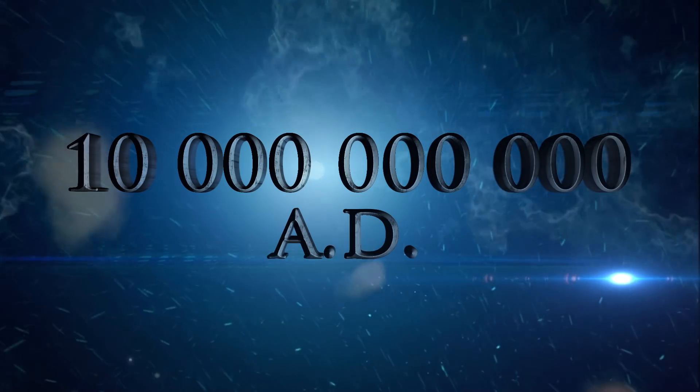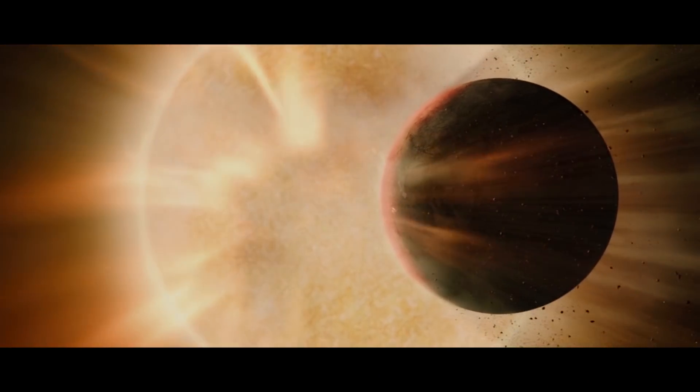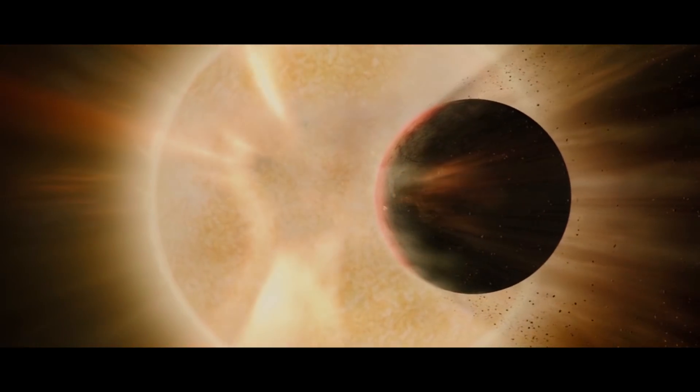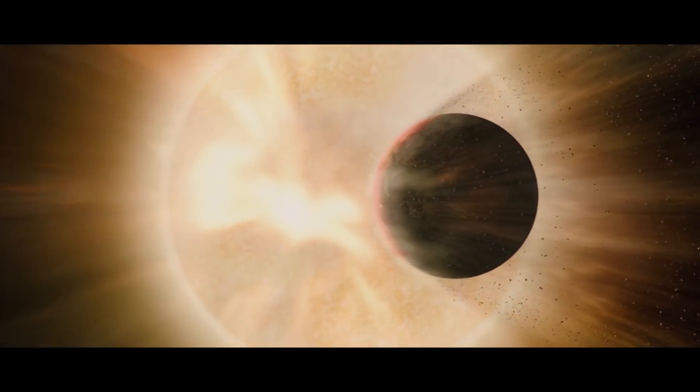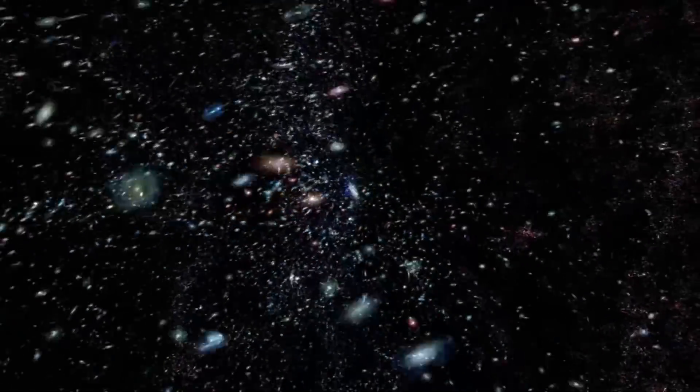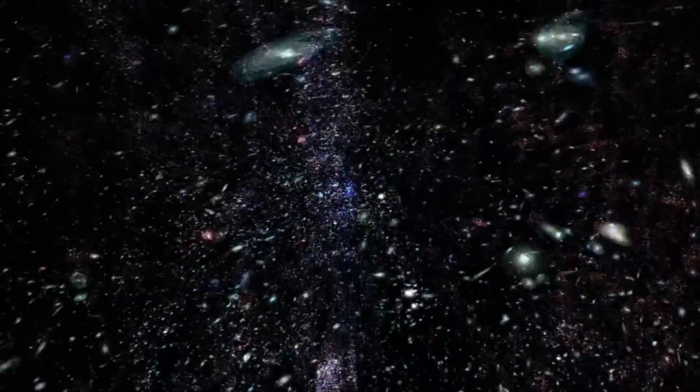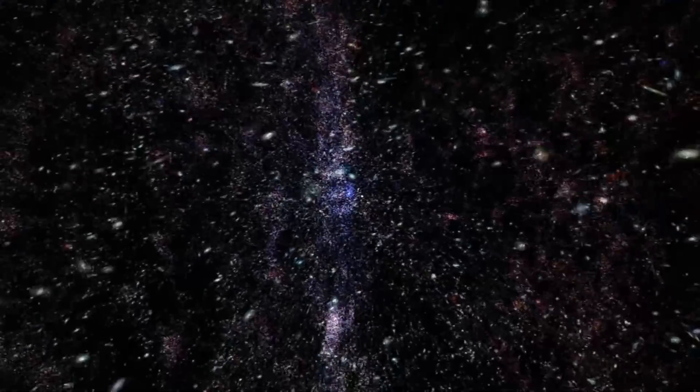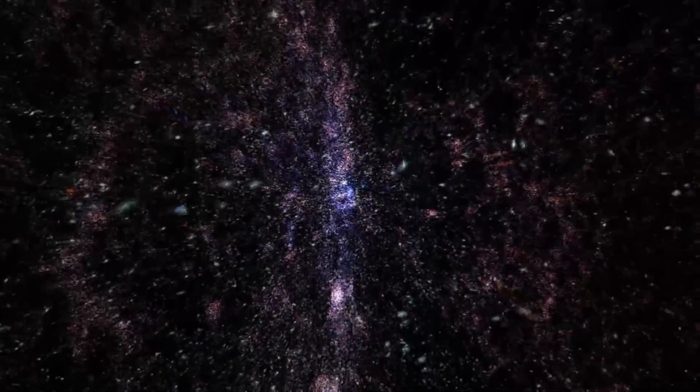Ten billion years from now, the Sun has expanded and it has become so large that it has absorbed and destroyed the Earth. Then, it has collapsed into a white dwarf. The galaxy and the whole universe move slowly to extinction, with the running down of the energy generated by the primeval Big Bang.